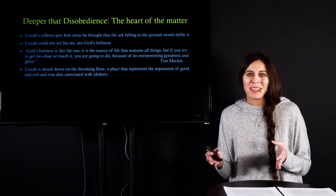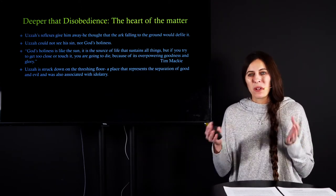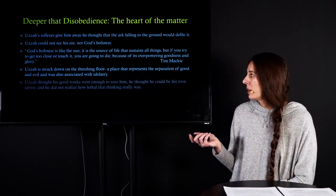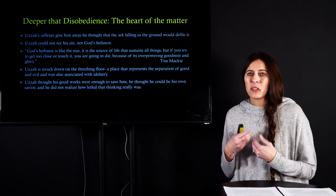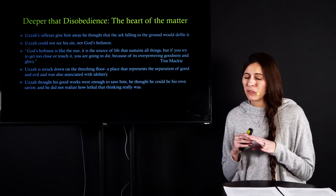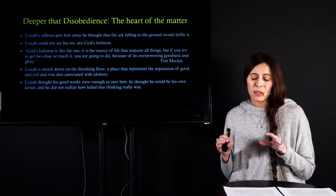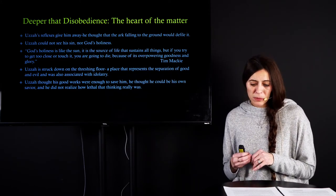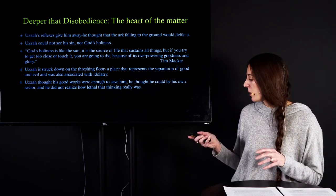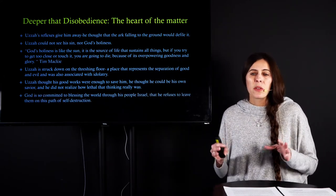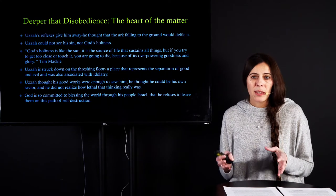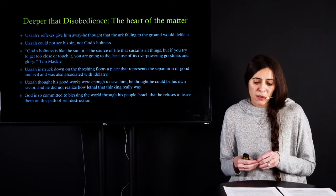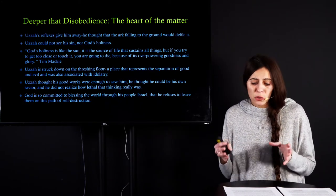And we are told that Uzzah is struck down on the threshing floor. And over and over again in the Bible, the threshing floor is very symbolic for this separation of good and evil. And it's also linked to idolatry. And so Uzzah, there is this clear distinction that God is saying, I'm holy. Mankind is evil. And what's Uzzah's idolatry? Well, Uzzah thought he could approach God based on his good works, that he could be his own savior. And he didn't realize how very lethal that type of thinking was. But God does not give up on his people because he is so committed. He is so committed to blessing the world through them, that he will not allow them to go on in this self-destructive pattern.